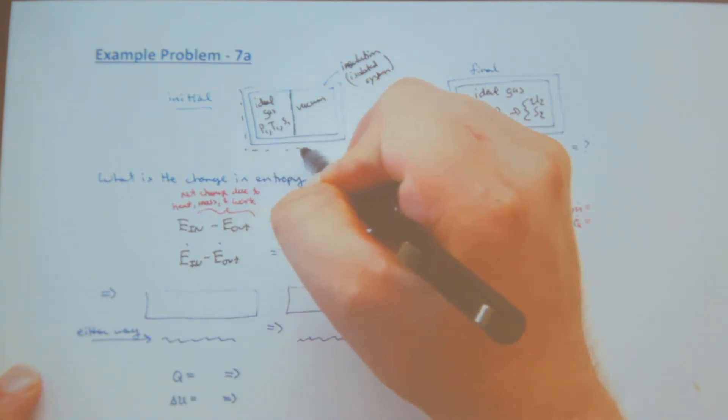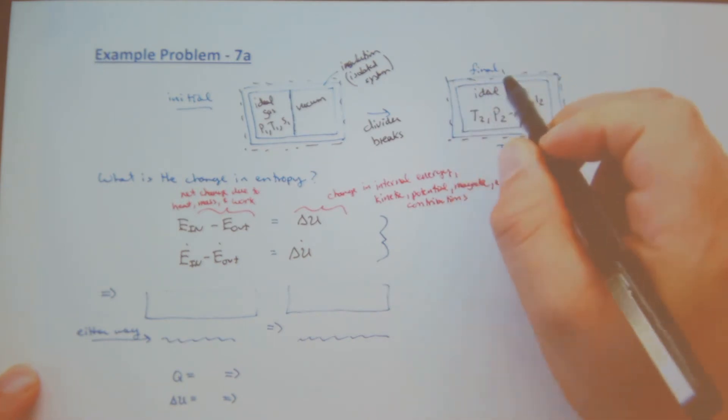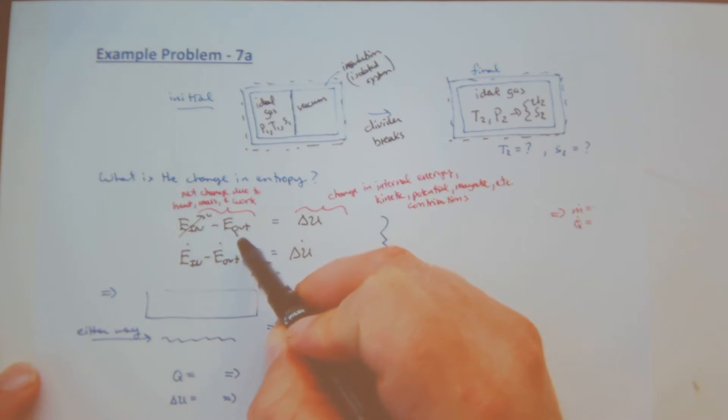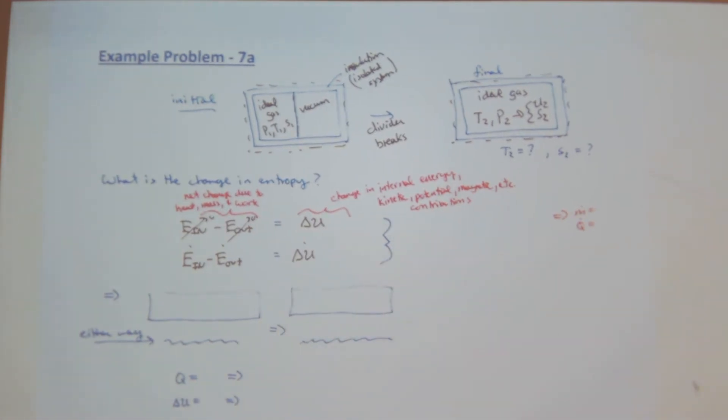Zero. Draw my boundary. I have an isolated system. This is zero. What is my total energy? There's no change in boundary, no heat or mass that can cross. So there's no heat in, no work in, no mass in. Likewise, this is zero. So what is my change in internal energy? Zero.